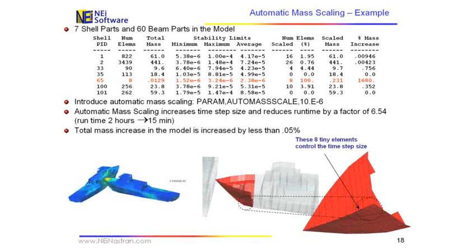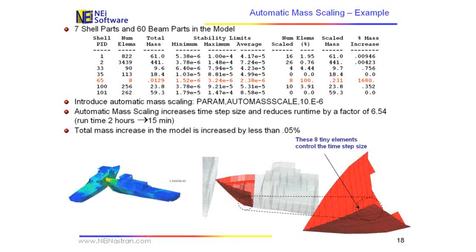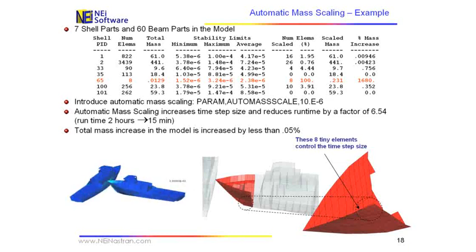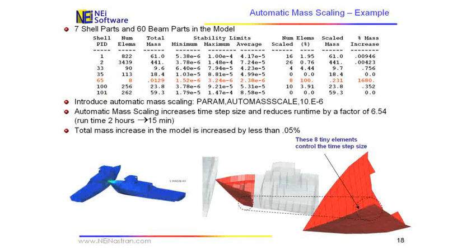So the best thing to do when you're using auto-mass scaling is to do a data check run first and go see what effect it had on all your parts, and whether you've really significantly affected anything in a way that would make sense to you.